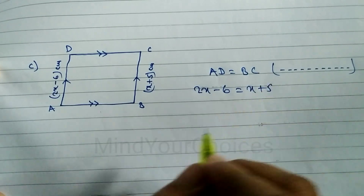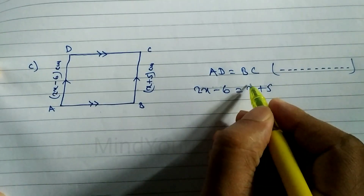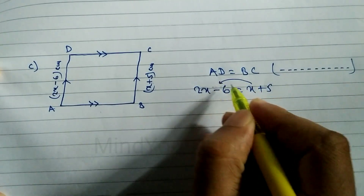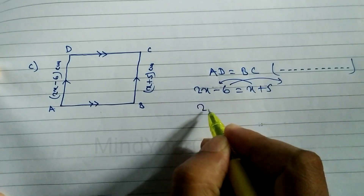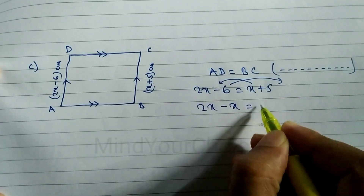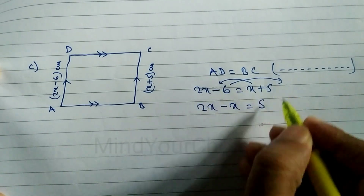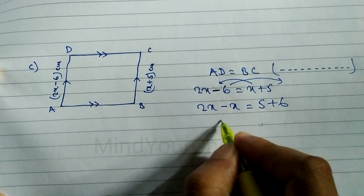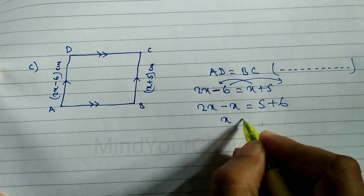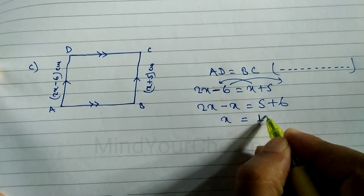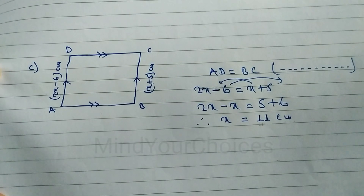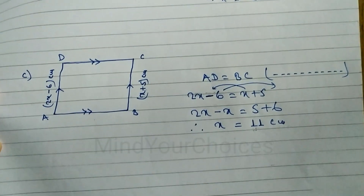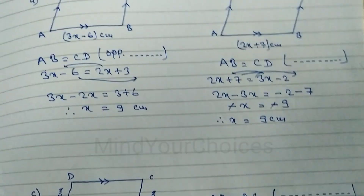BC is equal to x plus 5, so we write 2x minus 6 is equal to x plus 5. Now arrange: bring x to the left side and 6 to the right side. So 2x minus x is equal to 5 plus 6. When we subtract we get x is equal to 11. Therefore the value of x is equal to 11.